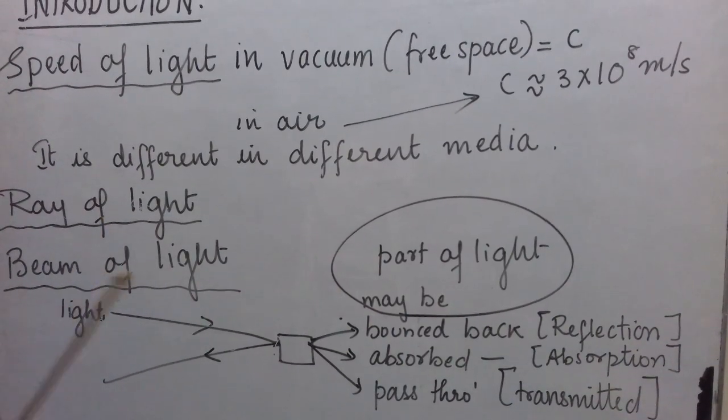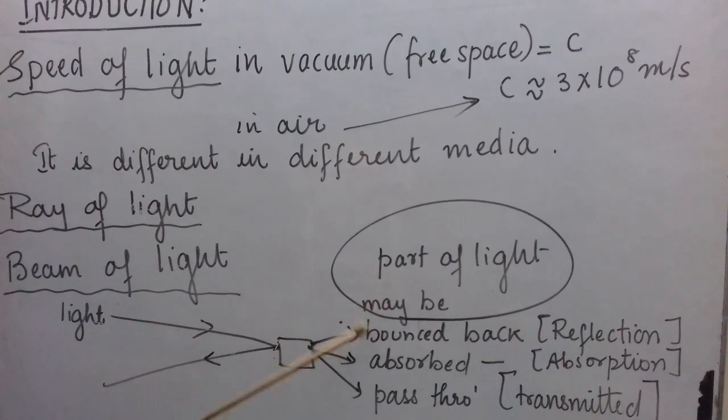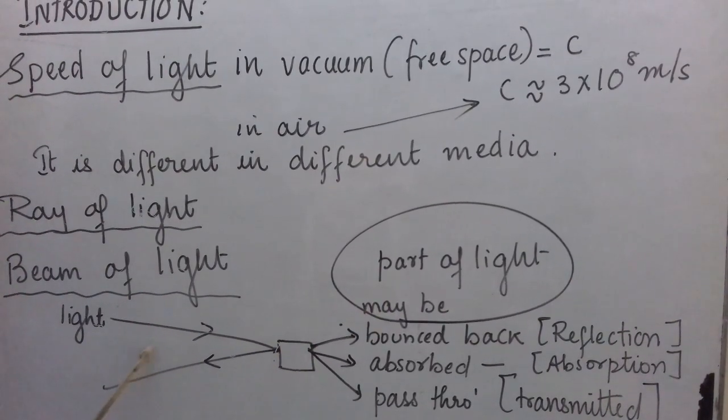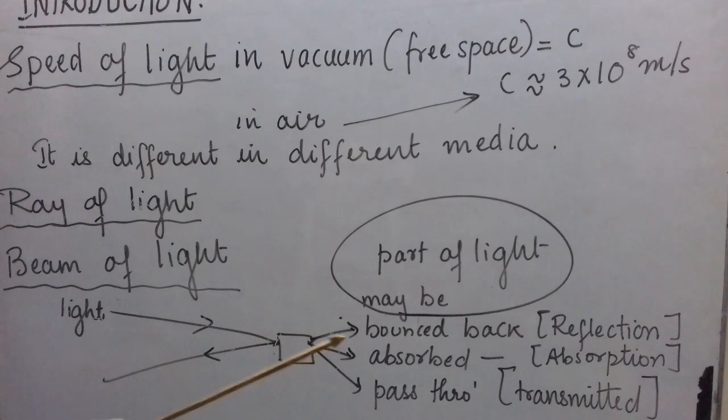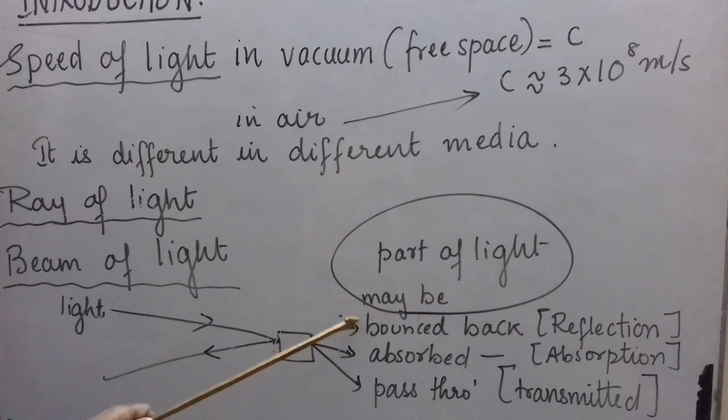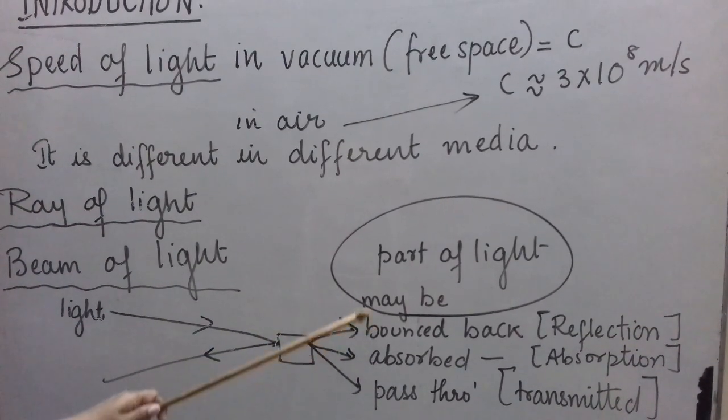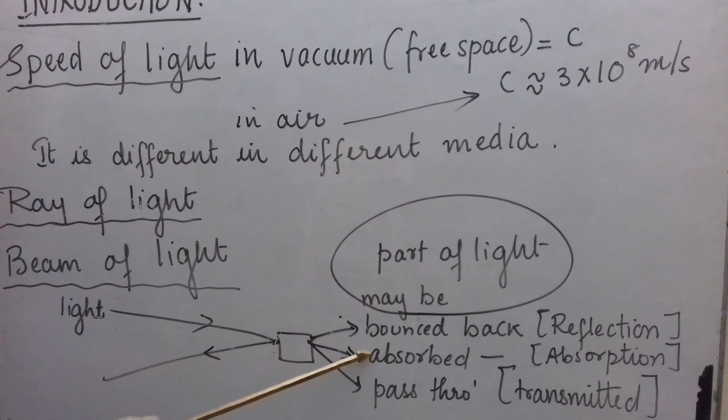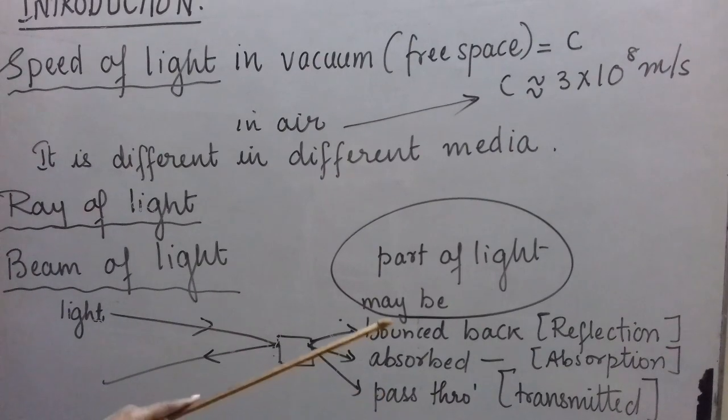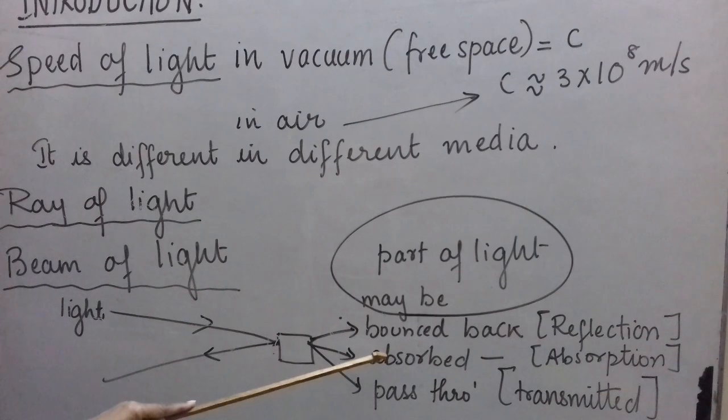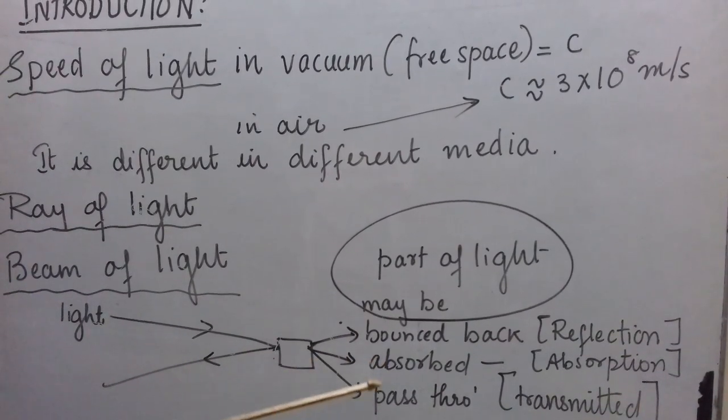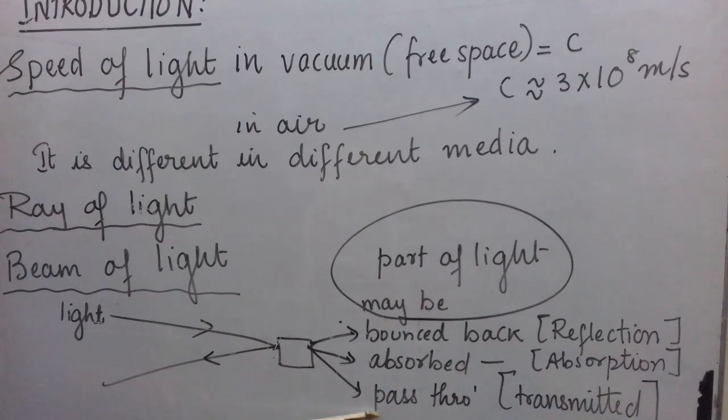Now, whenever light falls on any object, part of light may be bounced back. Part of light may be absorbed by the object and part of light may pass through the object. So, these three things can happen at the same time. Part of light may bounce back. Part of light may be absorbed by the object. Part of light may pass through the object. This bouncing back of light is called reflection of light. Absorption of light means when the light is absorbed by the object. And passing through is also called transmission of light. We say light is transmitted through the object.